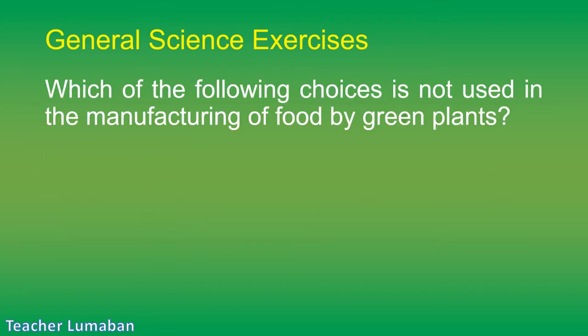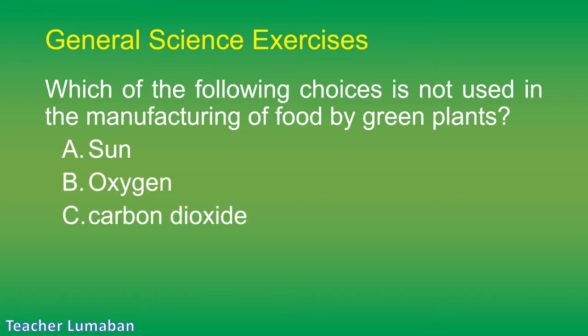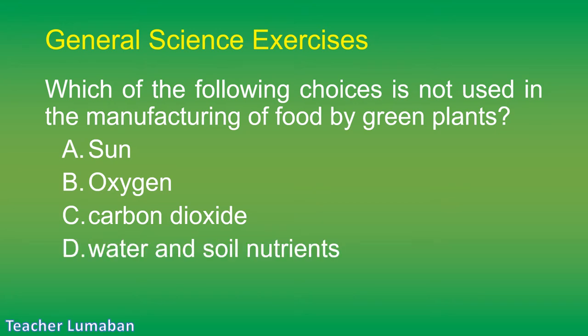Which of the following is not used in the manufacturing of food by green plants? Letter A: sun. Letter B: oxygen. Letter C: carbon dioxide. Letter D: water and soil nutrients.